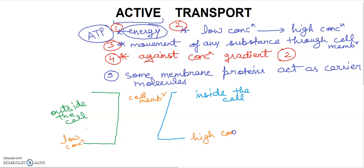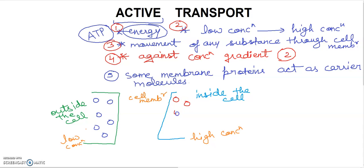So where does the molecule movement occur in active transport? It moves from low concentration to high concentration. You can see that the outside of the cell is at low concentration, and the inside of the cell has high concentration. This is the direction of active transport.